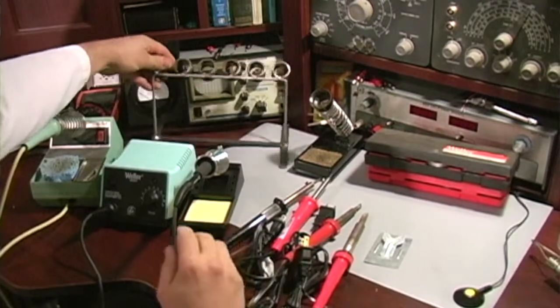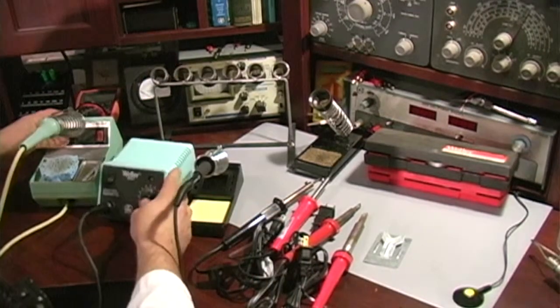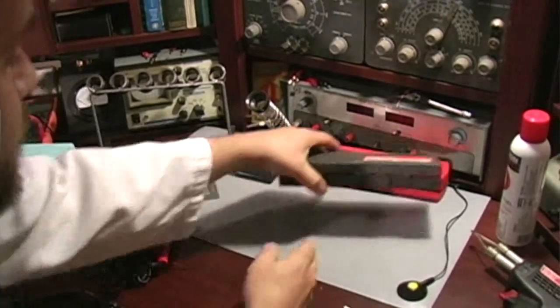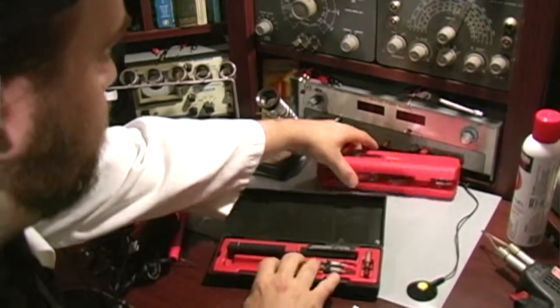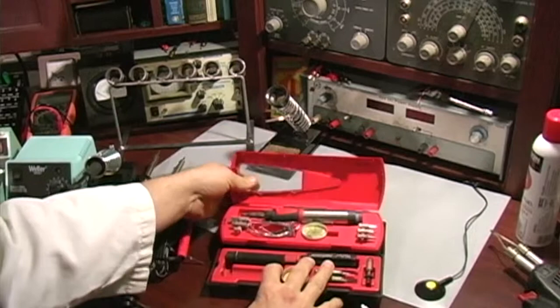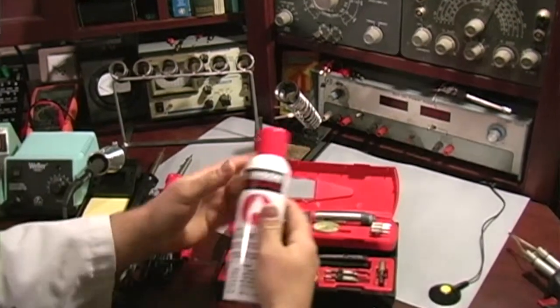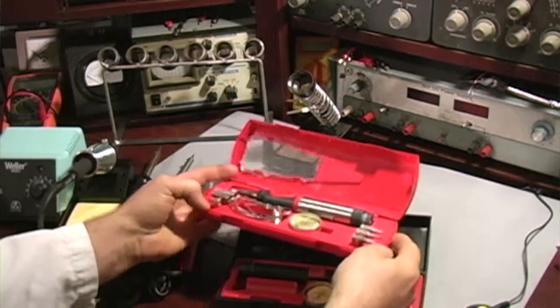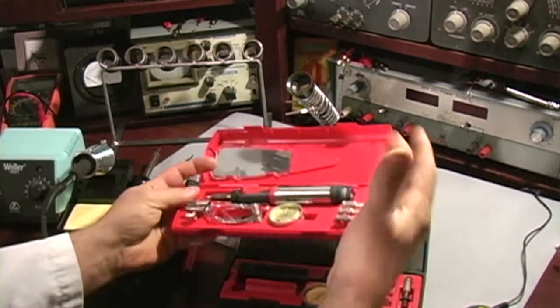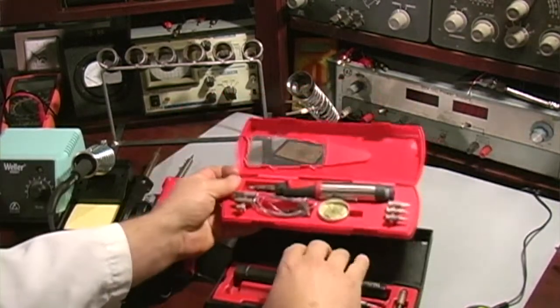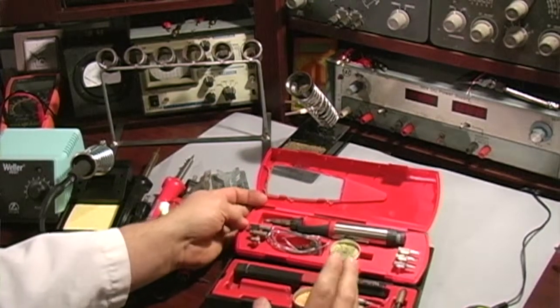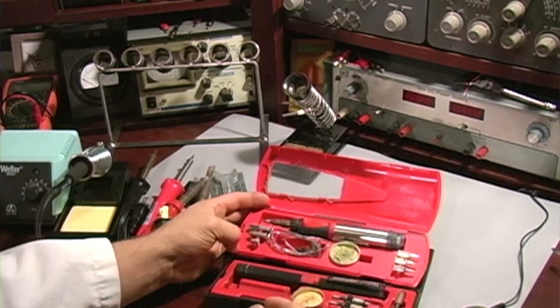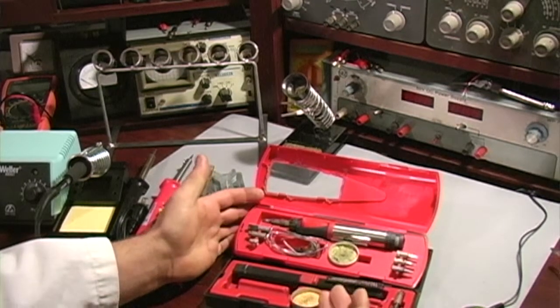Now we're going to move from electric soldering irons over to something else you might be interested in. These are butane powered. I've got two versions here. These take butane fuel. The good thing about these is you can carry them in your car. You can take them where you don't have electricity if you need to repair something. And that's, in my opinion, the best thing for these is just repair work where you don't have electricity, which is going to be most likely your car.